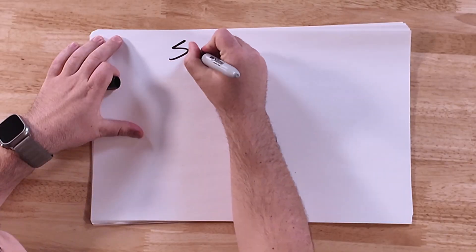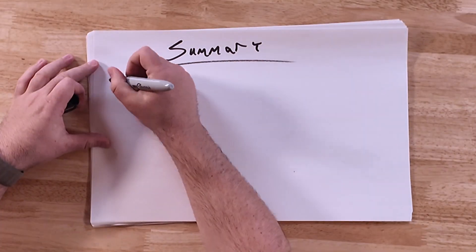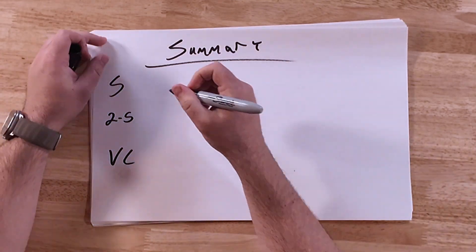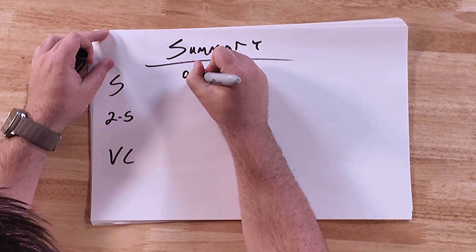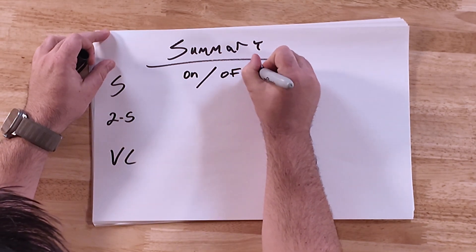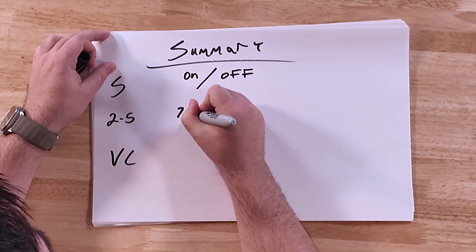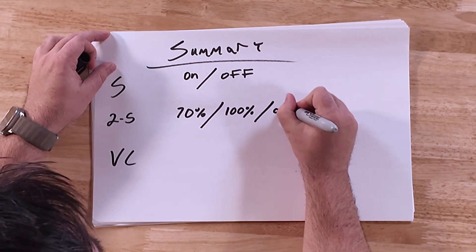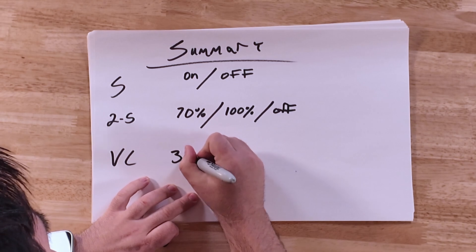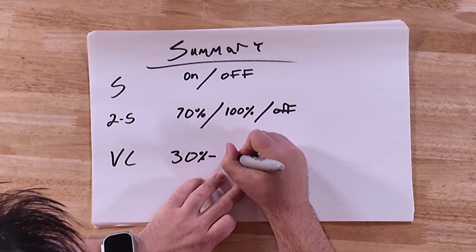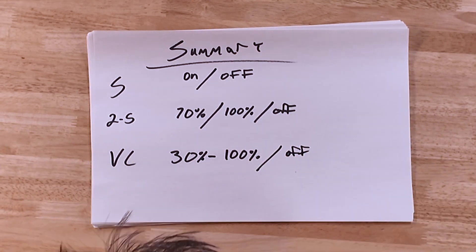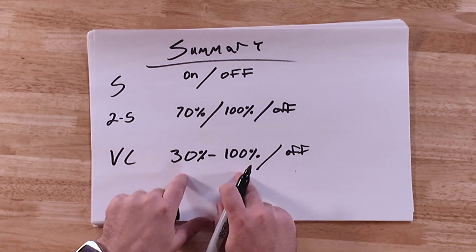Here's a quick summary of what we talked about: single-stage equipment is either on or off; two-stage equipment operates at 70% capacity, 100% capacity, or off; variable capacity equipment ramps from 30% capacity to 100% capacity or completely off. The majority of time, variable capacity will stay in that 30 to 100% range depending on the ambient temperature outside.